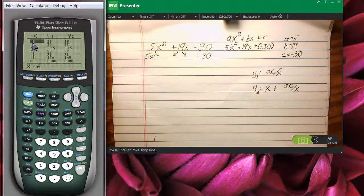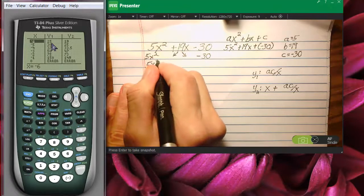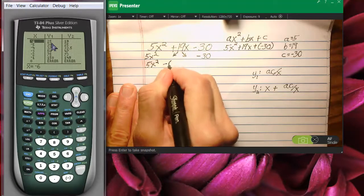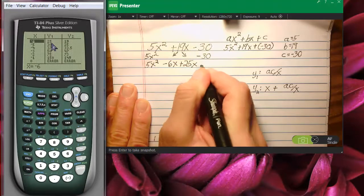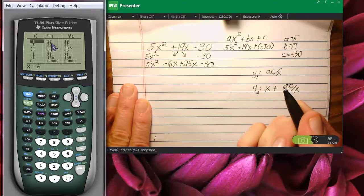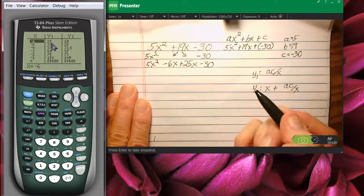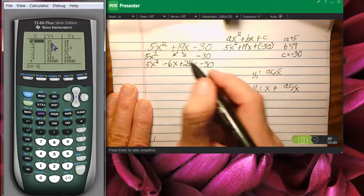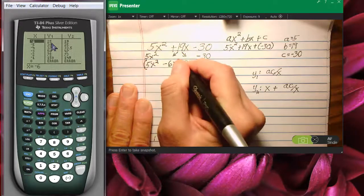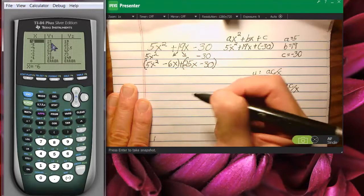These two numbers are the numbers that will permit us to rewrite 19x in two terms. We're going to, in fact, write negative 6x plus 25x. Here I go. I'm going to write 5x squared minus 6x plus 25x minus 30. Now, notice that negative 6x plus 25x is indeed 19. So I haven't changed the numerical value of this quadratic trinomial. Now, I'm going to put parentheses around the first two terms and parentheses around the second two terms being very careful to leave the plus in the middle.